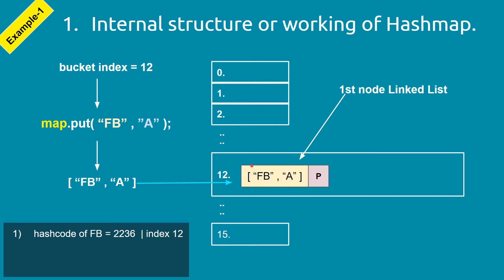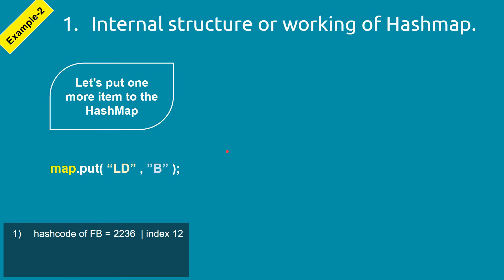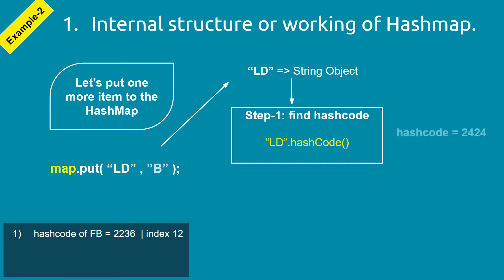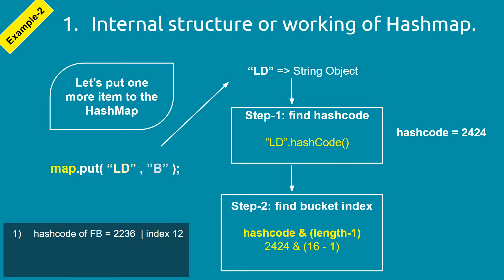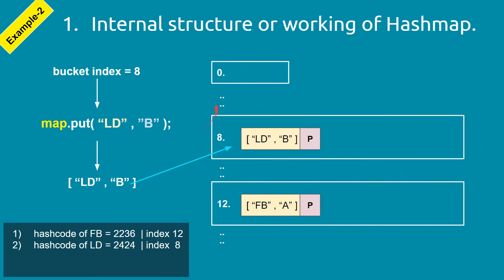For a second example, suppose we put a new key-value pair. JVM takes the key, gets its hash code — in this case 2424 — then calculates the bucket index, which comes out to 8. So this key-value pair goes into the bucket at index 8 as the first node.